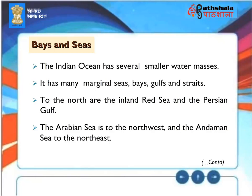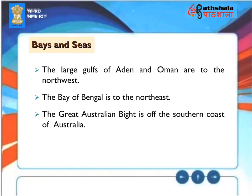Bays and Seas. The Indian Ocean has several smaller water masses, including many marginal seas, bays, gulfs, and straits. To the north are the inland Red Sea and the Persian Gulf. The Arabian Sea is to the northwest, and the Andaman Sea to the northeast. The large gulfs of Aden and Oman are to the northwest. The Bay of Bengal is to the northeast. The Great Australian Bight is off the southern coast of Australia.